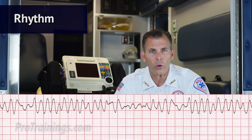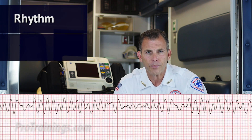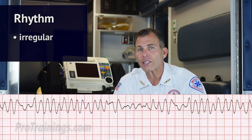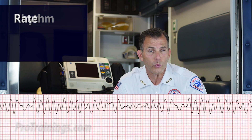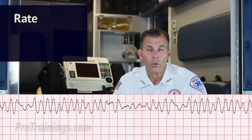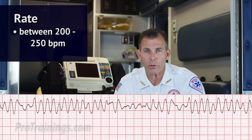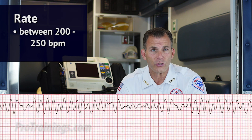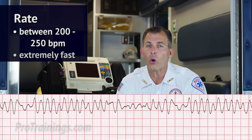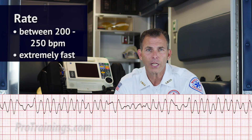When we look at the EKG, we still want to ask ourselves some questions. Is the rhythm regular or irregular? In this case, it's irregular. If we ask ourselves what's the rate, we're somewhere between 200 and 250 beats per minute. So is that rate normal, fast, or slow? Of course, the rate is extremely fast.